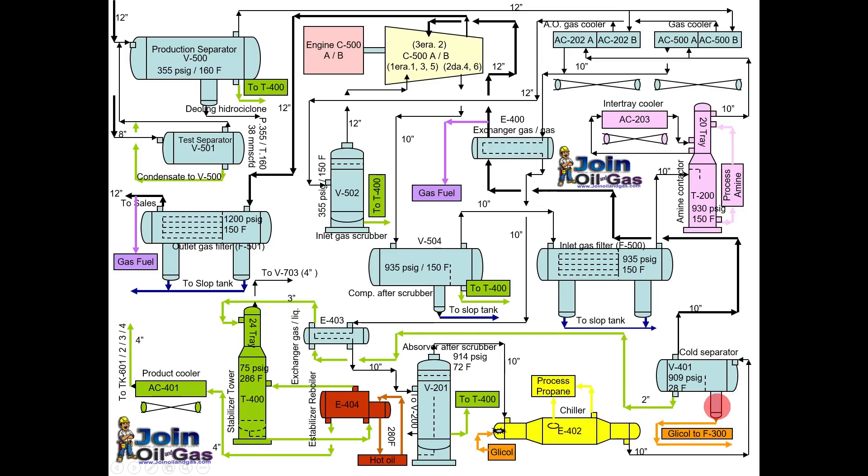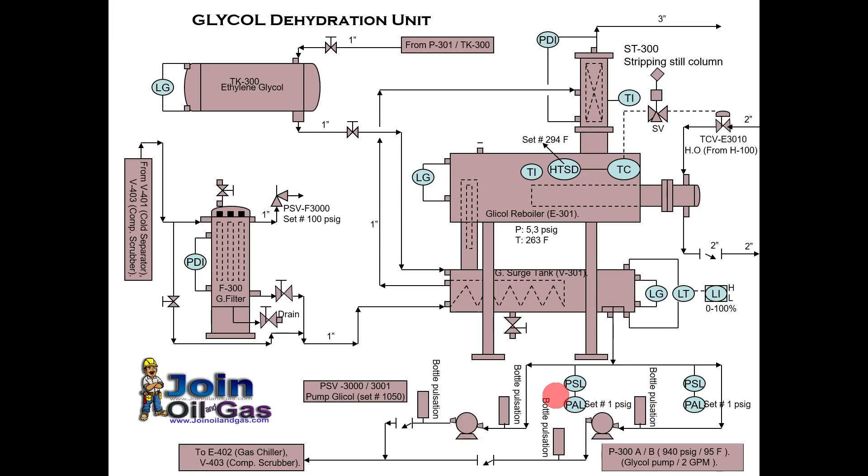From this it is moving back to the glycol dehydration unit where we need to regenerate this glycol. We have to remove all the absorbed water from this and we will make it ready for the next use. So let's see this unit process. So this is the point. Now first of all we have a filter to remove any particles or any dust that may come with this glycol.